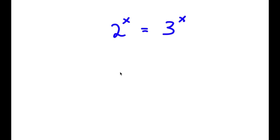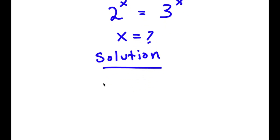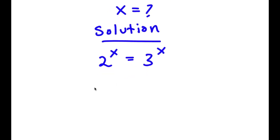In this problem, I have 2 to the power of x is equal to 3 to the power of x. I obviously want to find the value of x here. For my solution, I'm going to first start by writing 2 to the power of x is equal to 3 to the power of x, and I'm going to take the log of base 2 on both sides.